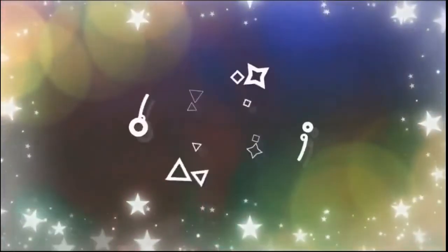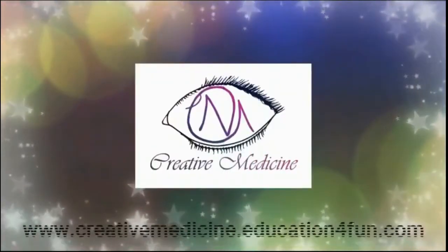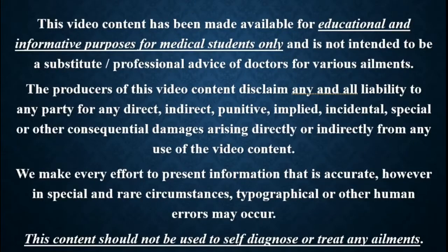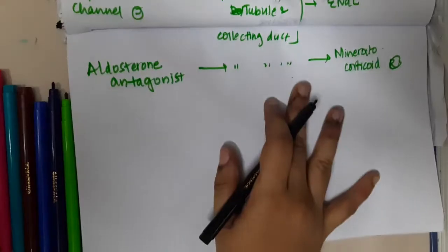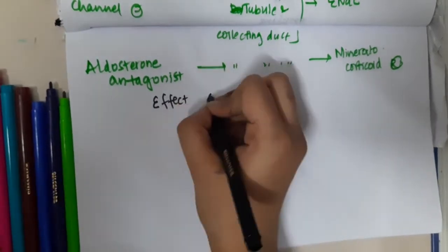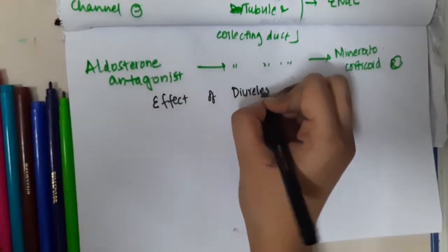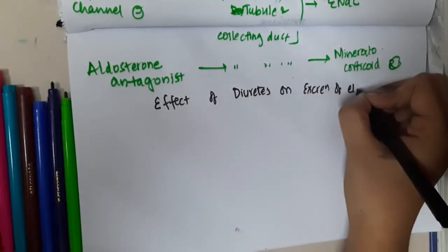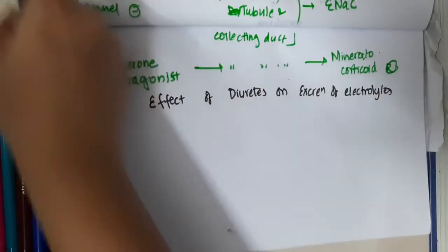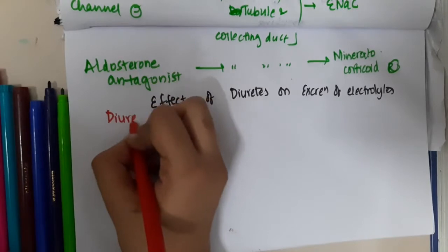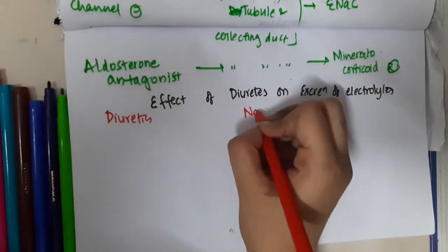Hello friends, welcome to Creative Medicine. In this lecture we will learn about one more table which shows the effect of diuretics on excretion of electrolytes. If you see, diuretics effects on sodium, potassium, and calcium.